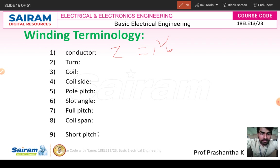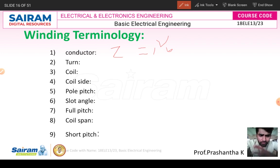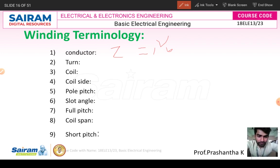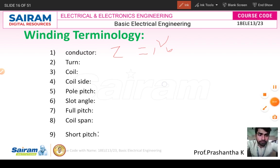A turn consists of a conductor in one slot connected to a conductor in another slot. The number of turns in a coil is called a coil. The coil side refers to the distance between conductors placed in different slots. Pole pitch is the number of slots per pole, and the slot angle is 180 degrees divided by the number of slots per pole.